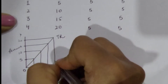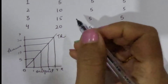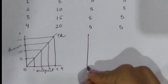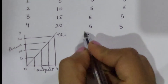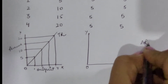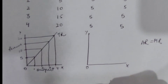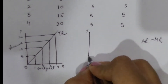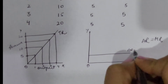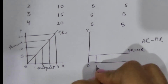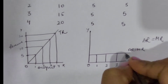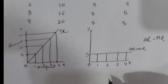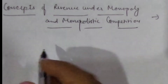The total revenue curve increases at a constant rate. Coming to average revenue and marginal revenue curves, average revenue equals marginal revenue in the case of perfect competition and it is parallel to the x-axis, because whether we sell one, two, three, or four units, AR remains the same at 5, as depicted by the table.